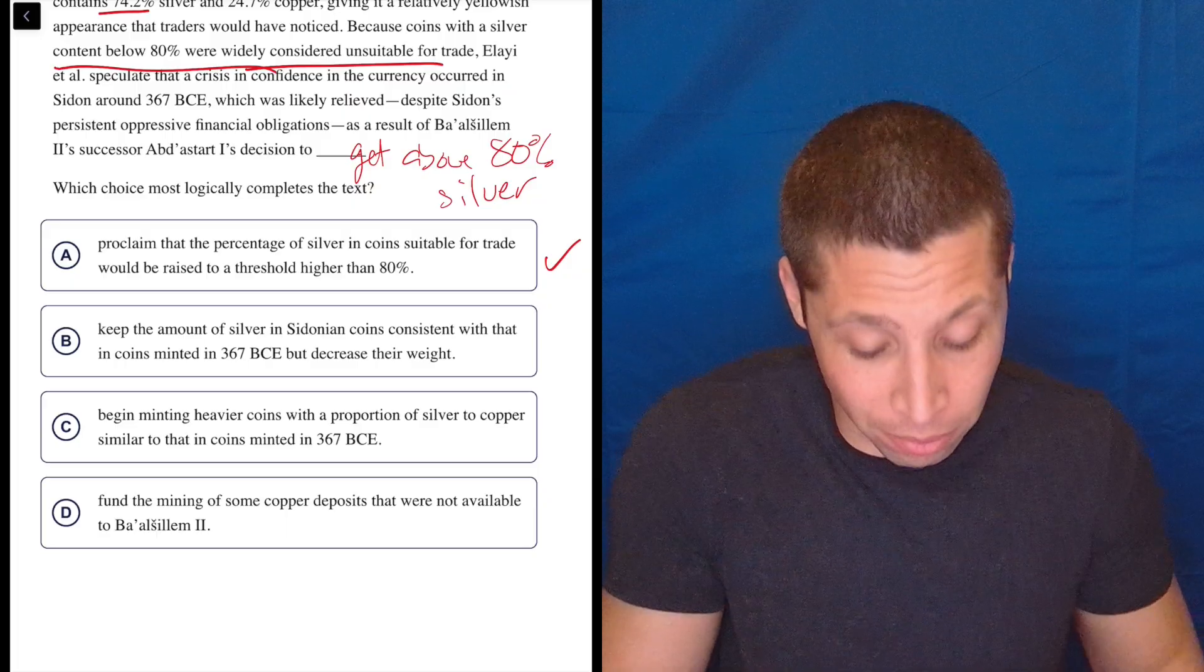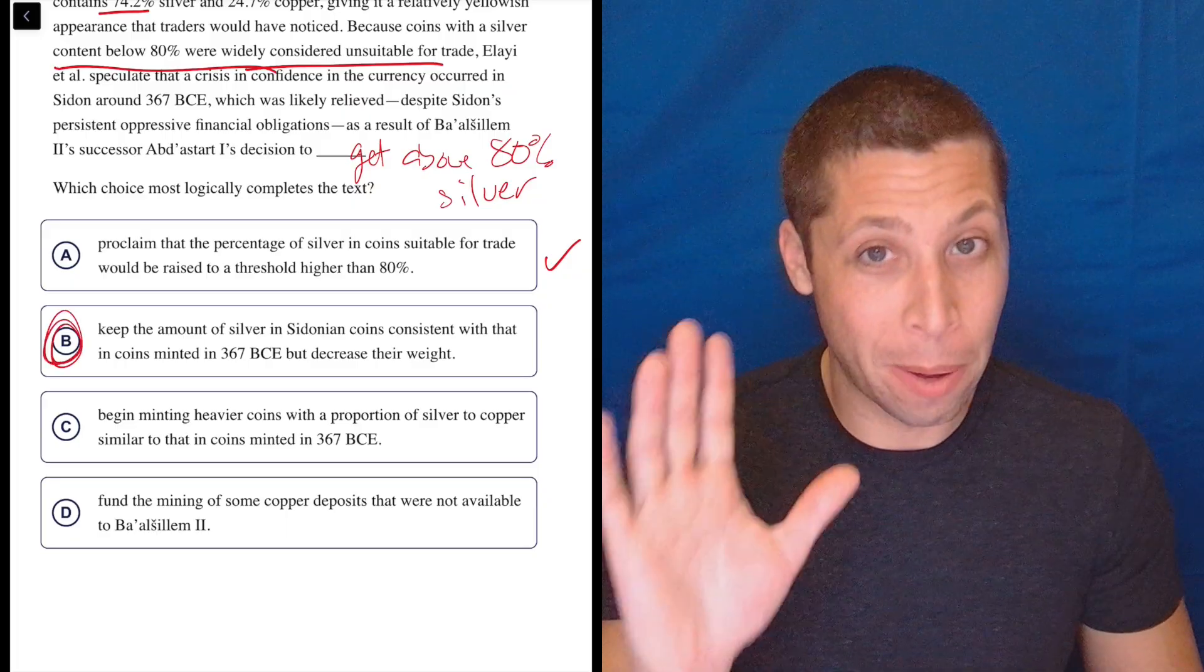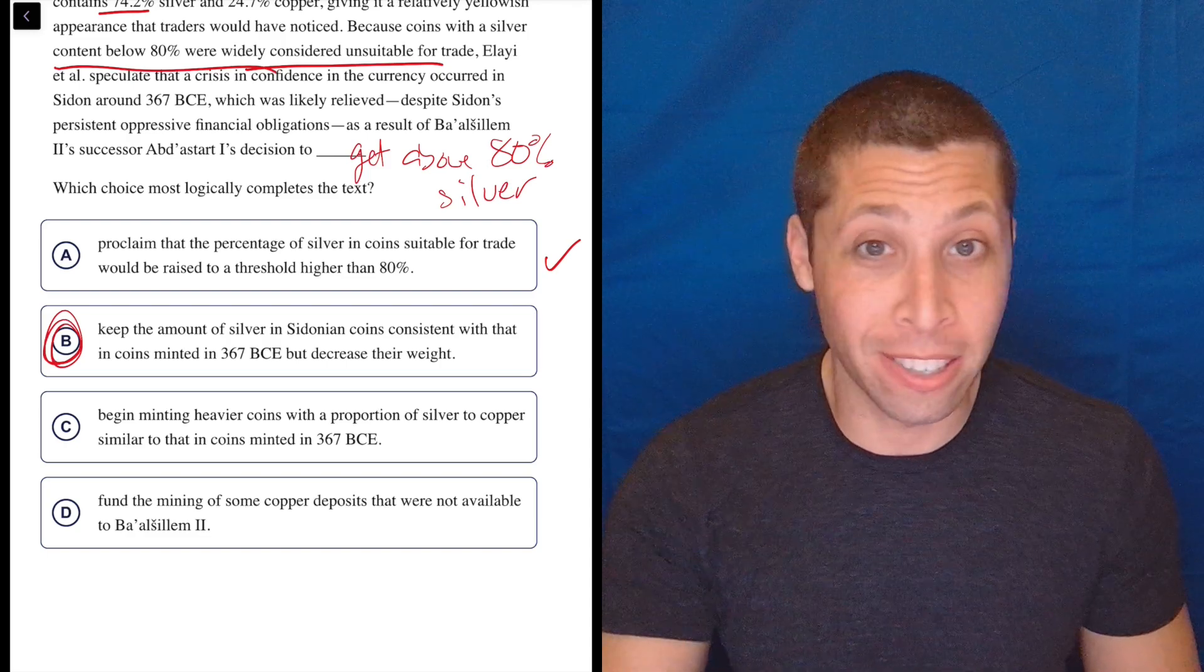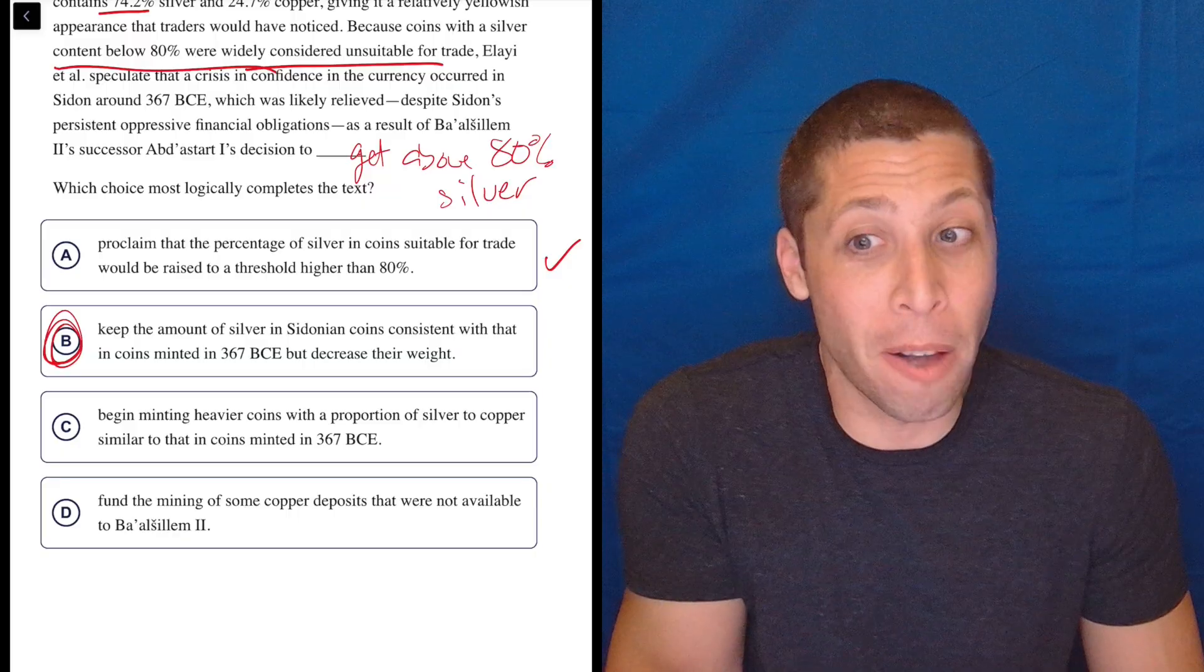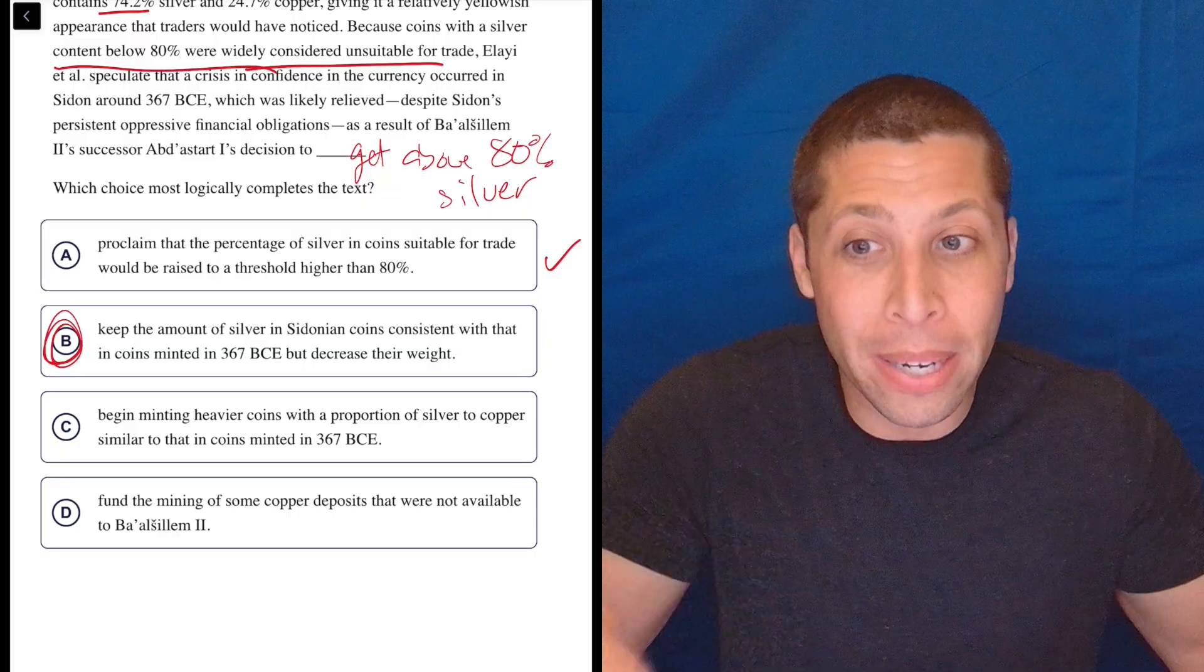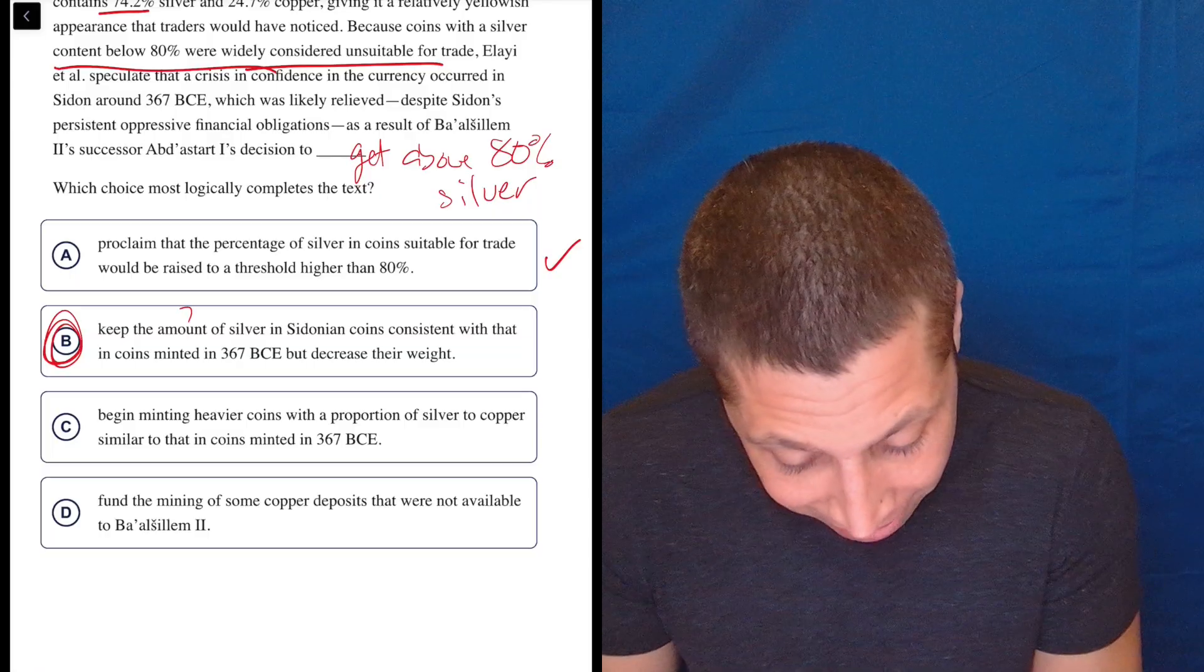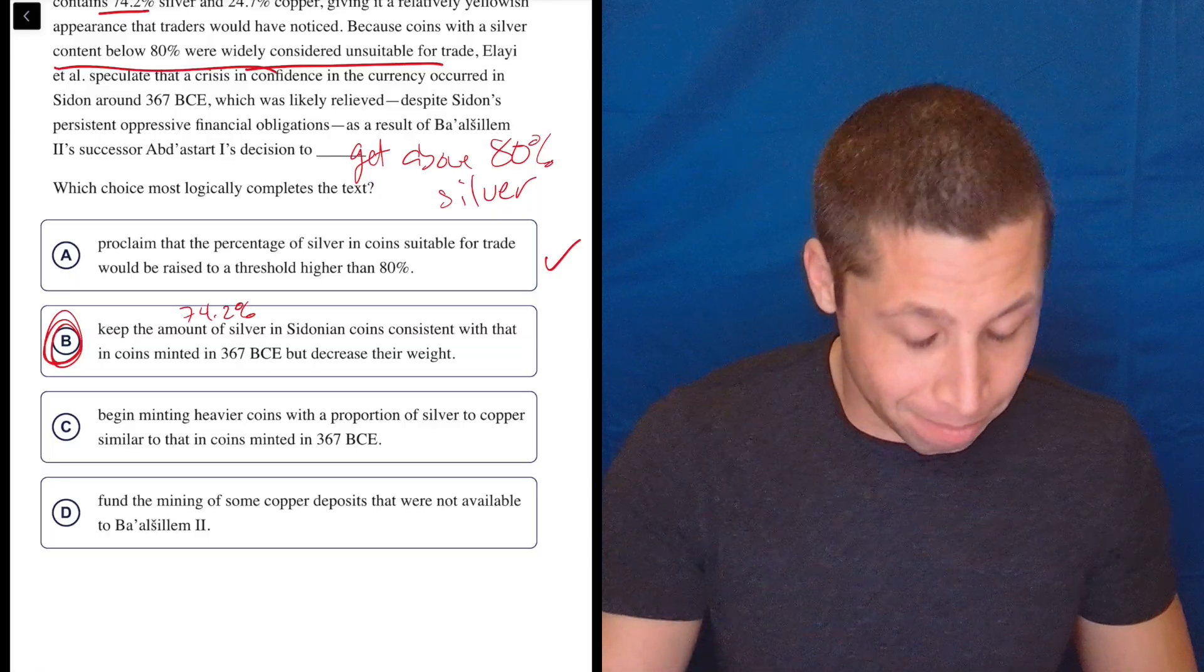So wouldn't we want to raise the amount of silver? Now, I'll just spoil it a little bit. That's the right answer. So we'll come back to that. But right now, if this were me in a test, B is gone because it does not match my summary. And it seems like it's not solving the problem of you got to be above 80%. If you keep it at 74.2%, that's what this is saying. Keep the amount of silver. So that sounds like 74.2%. Seems bad.